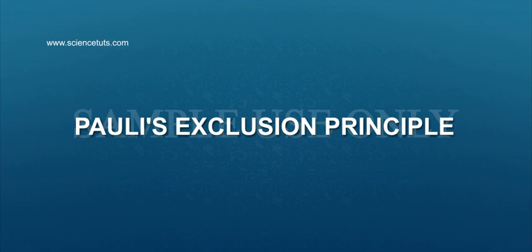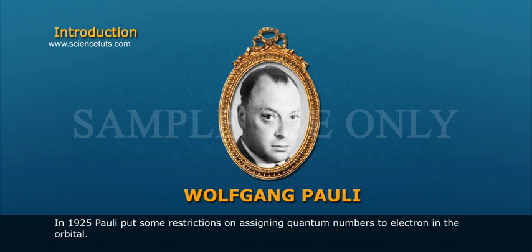Pauli's Exclusion Principle. In 1925, Pauli put some restrictions on assigning quantum numbers to electrons in the orbital.